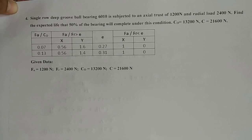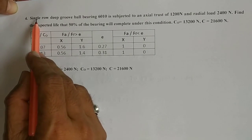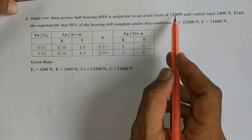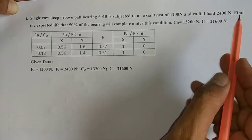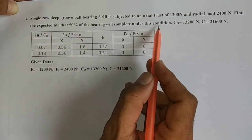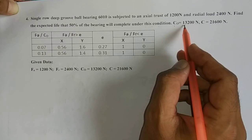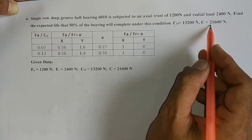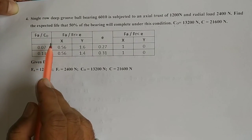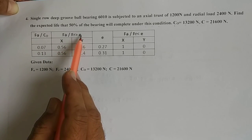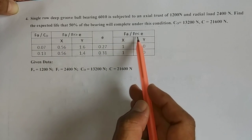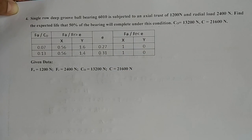Let us start example number 4. A single row deep groove ball bearing 6010 is subjected to an axial thrust of 1200 Newton and a radial load of 2400 Newton. Find the expected life that 50% of bearings will complete under this condition. Static load carrying capacity C0 = 30,200 Newton and dynamic load carrying capacity C = 21,600 Newton. A table of X and Y values based on the ratio Fa/C0 is given.